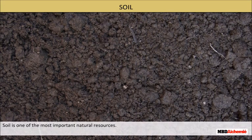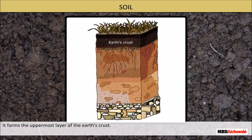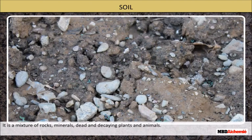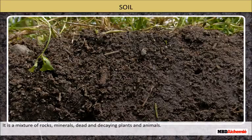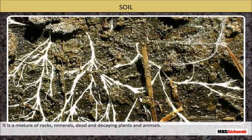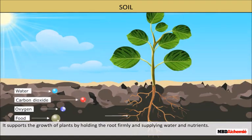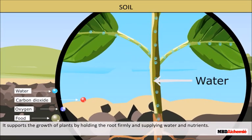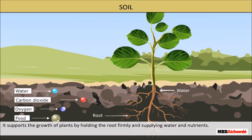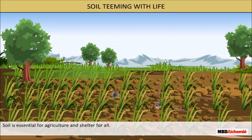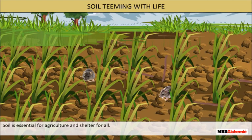Soil is one of the most important natural resources. It forms the uppermost layer of the earth's crust. It is a mixture of rocks, minerals, dead and decaying plants and animals. It supports the growth of plants by holding the root firmly and supplying water and nutrients. Soil is essential for agriculture and shelter for all. Soil is thus an inseparable part of our life.